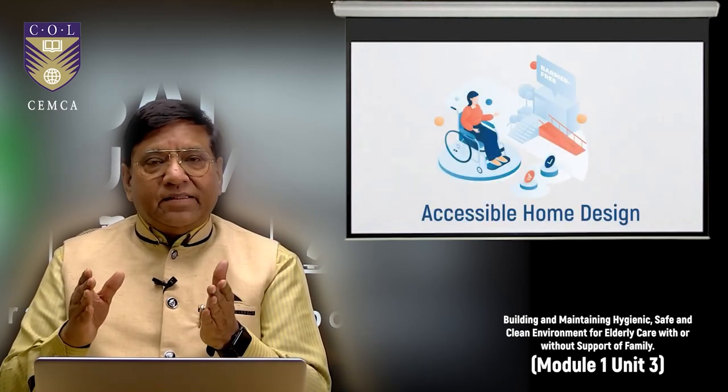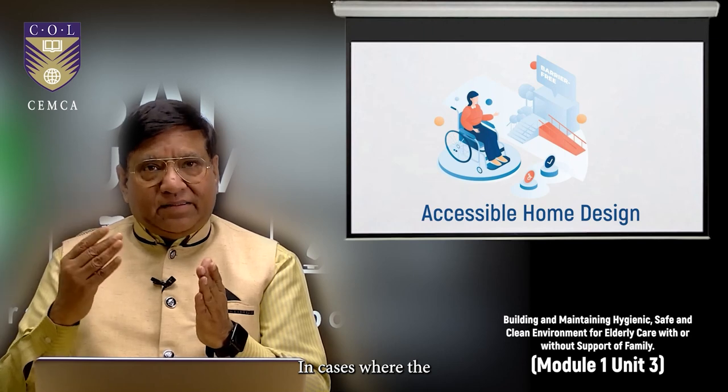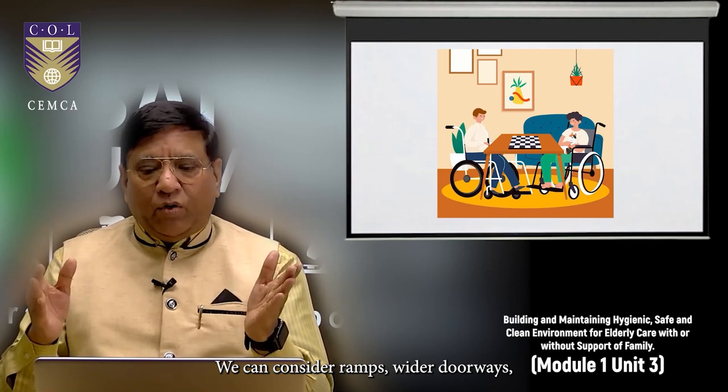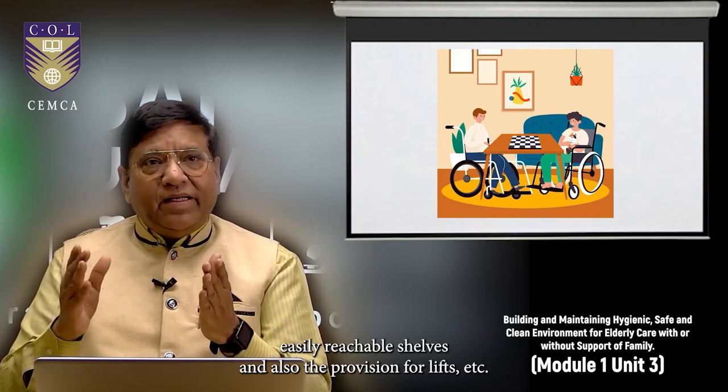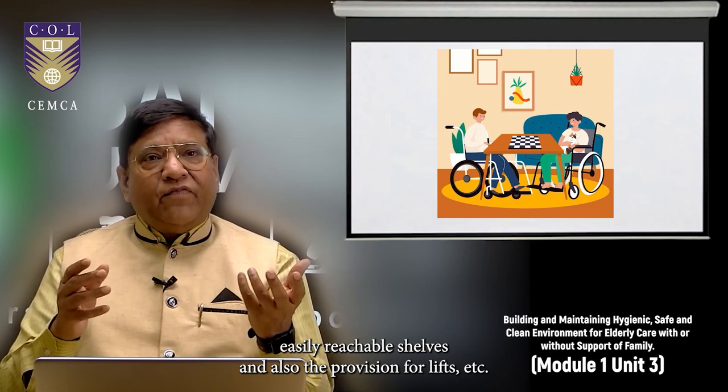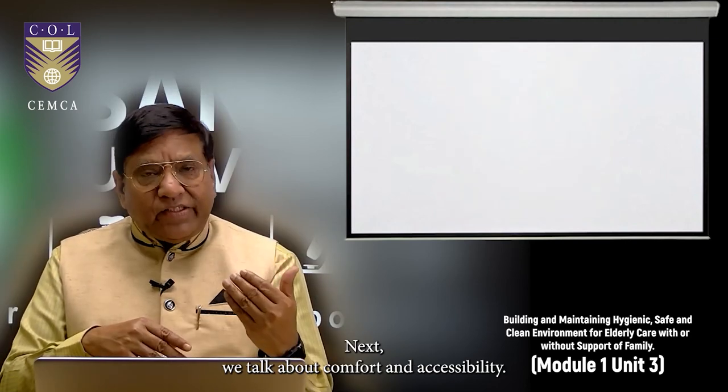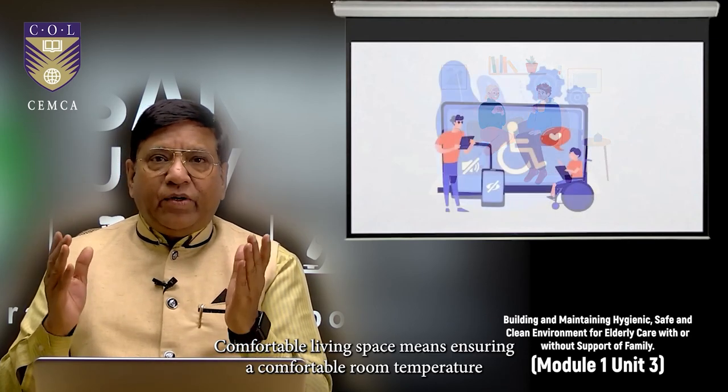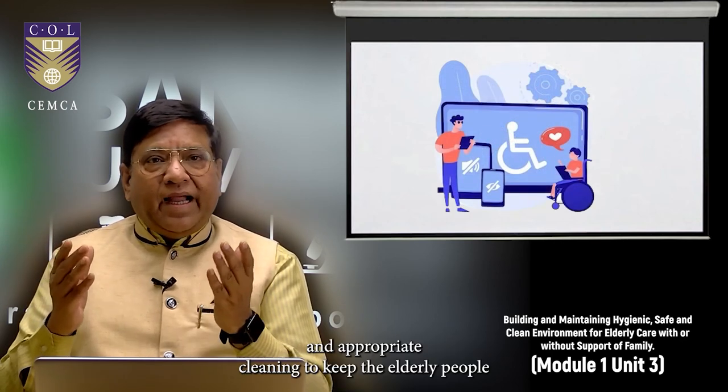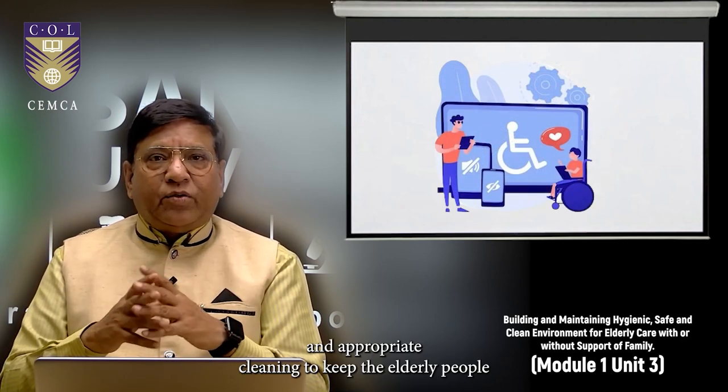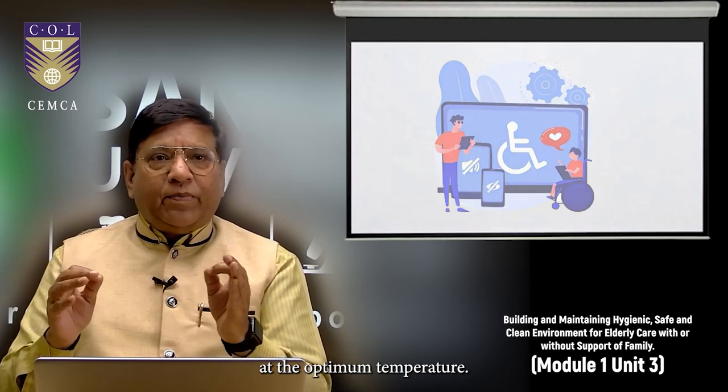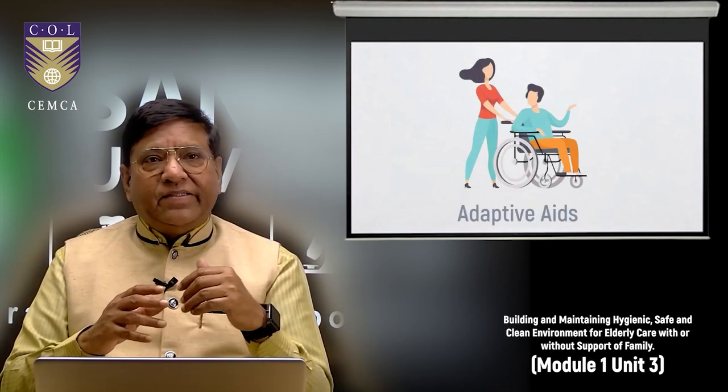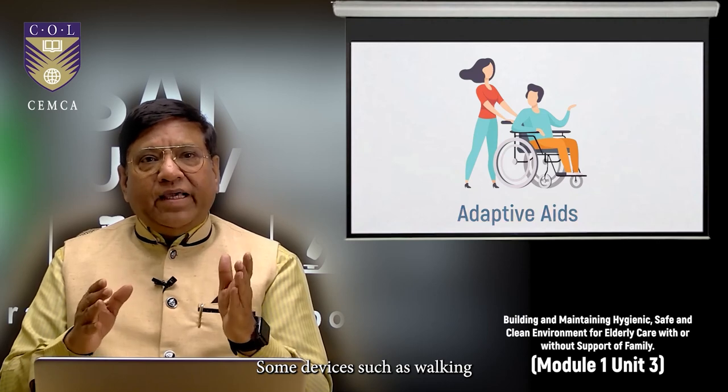Accessible home design. In cases where the community living of elders is there, we can consider ramps, wider doorways, easily reachable shelves and also the provision for lifts. Next we talk about comfort and accessibility. Comfortable living space means ensuring a comfortable room temperature and appropriate cleaning to keep the elderly people at the optimum temperature.